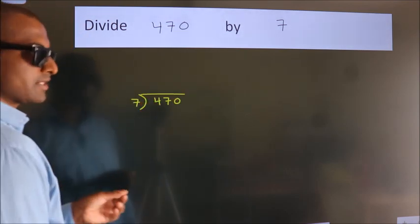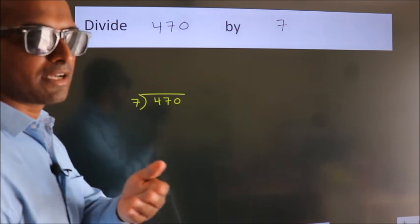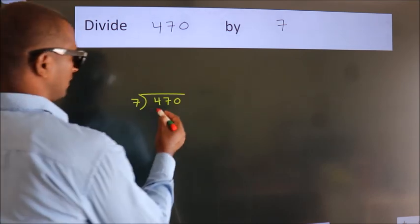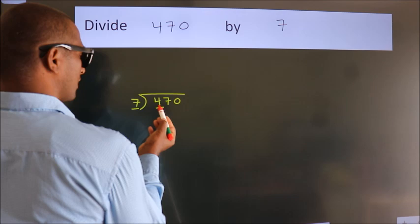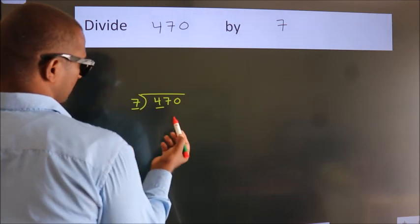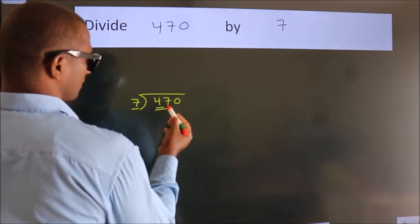This is your step 1. Next. Here we have 4, here 7. 4 is smaller than 7. So we should take two numbers, 47.